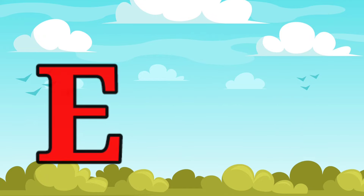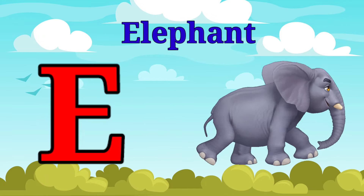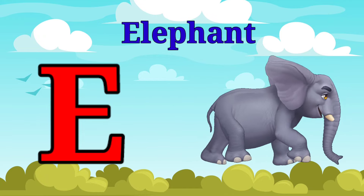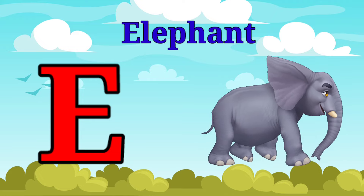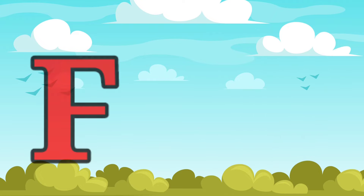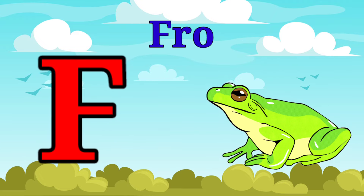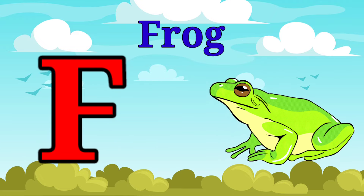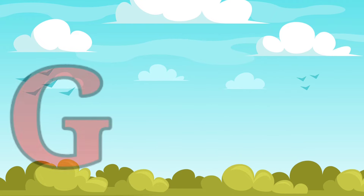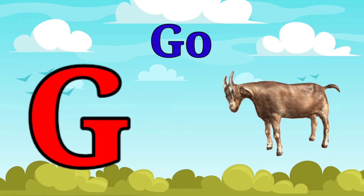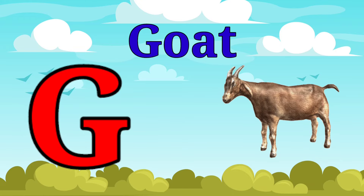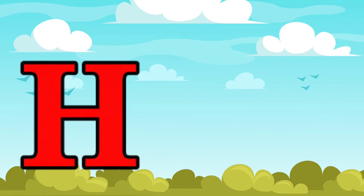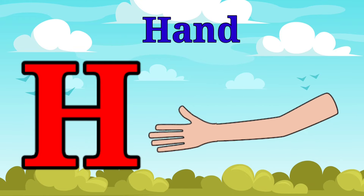E is for elephant, e-e-elephant. F is for frog, f-f-frog. G is for goat, g-g-goat. H is for hand, h-h-hand.